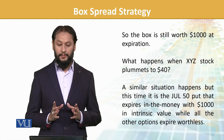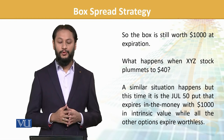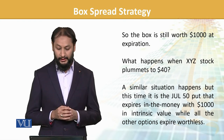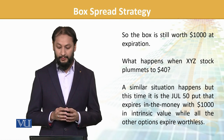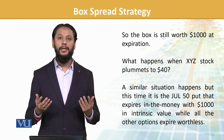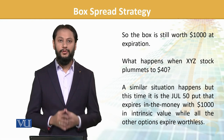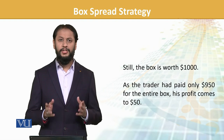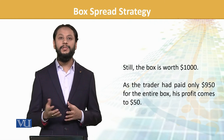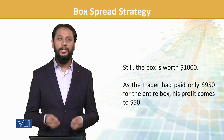So the box is $1000 at expiration. And if the stock goes to $40, we can see that the 50 put will make sense because the stock has fallen — its worth becomes $1000. So in all scenarios, the value remains $1000. We paid $950, so that means there's an arbitrage opportunity to gain $50.